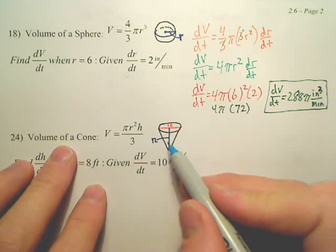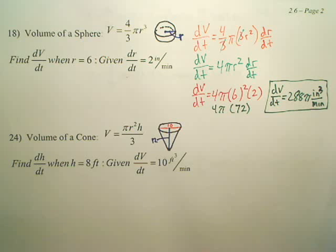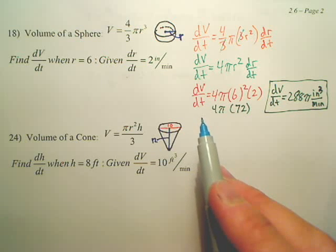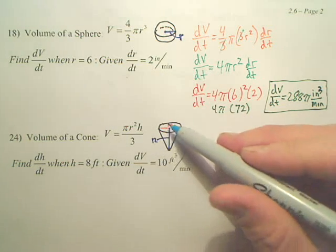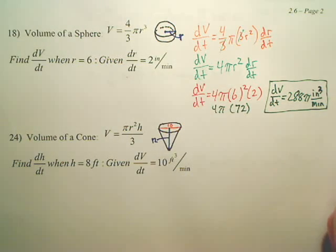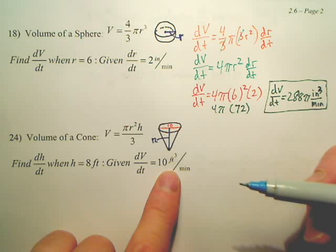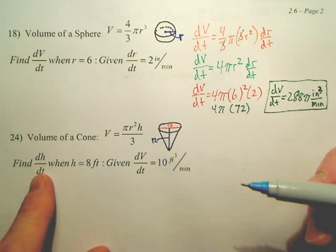Number 24. This cone is filled with water, and the water is being filled up. You're filling this cone up. Got it? We know that dV/dt is this. That's how fast we're filling the tank up with. I know my height is 8. I want to find dH/dt.